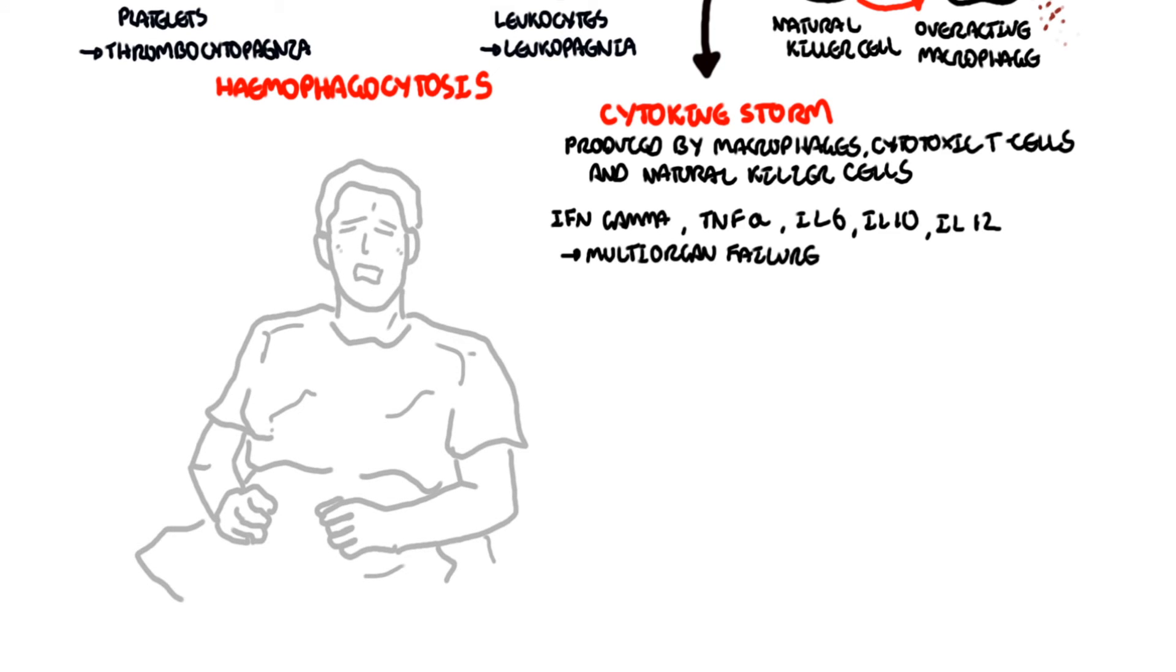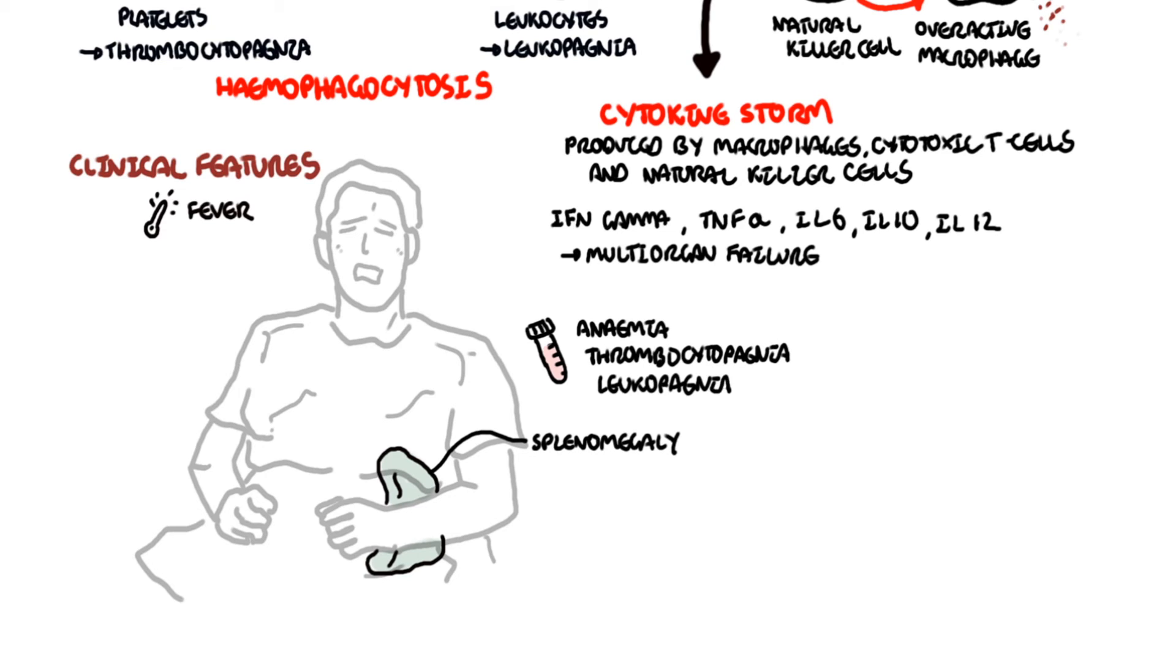Clinical features of hemophagocytic lymphohistiocytosis, as you can expect, include fever, splenomegaly, deranged bloods including anemia, thrombocytopenia, leukopenia, or leukocytosis, so either low or elevated white cell count.